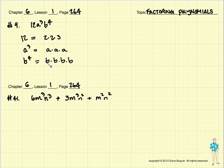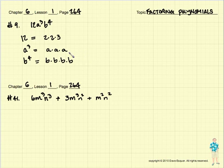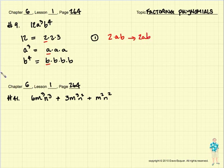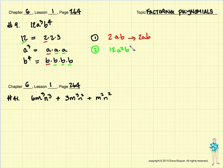Now when we have to factor these, we're just going to sort of mix and match and see what we can come up with. We're free to use any of these factors that we'd like. So I might choose for one of my factors 2a and b — so one of my factors would be 2ab. Maybe another factor might be, I might want to use the entire 12 — 12, maybe use a and a, and maybe use b, b, and b. So my second one might be 12a squared b to the 3rd.